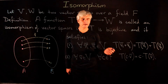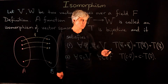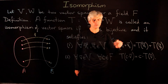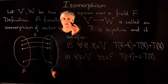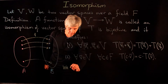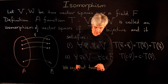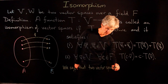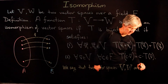So if we have a bijective function between two vector spaces that satisfies these two relations, these relations say that the function is compatible with the vector space structure, then such a function is called an isomorphism. We say that two vector spaces V and W are isomorphic if there exists an isomorphism T from V to W.